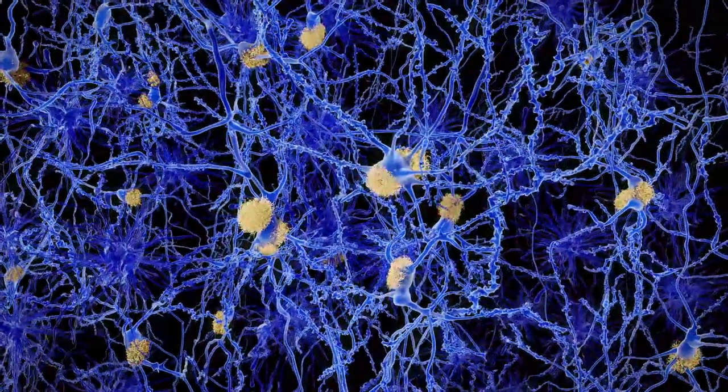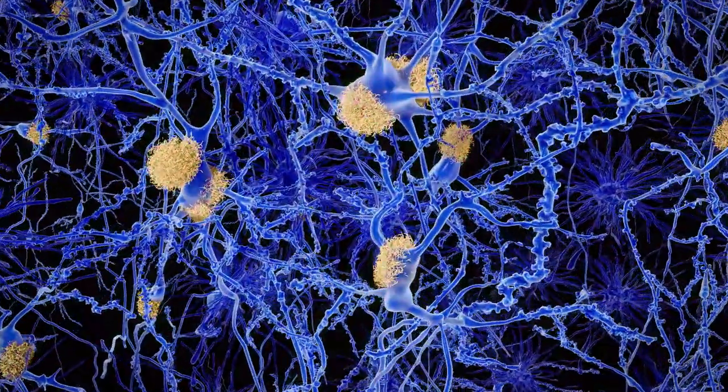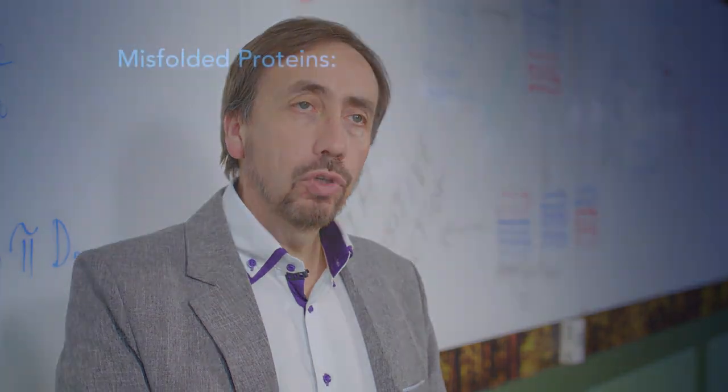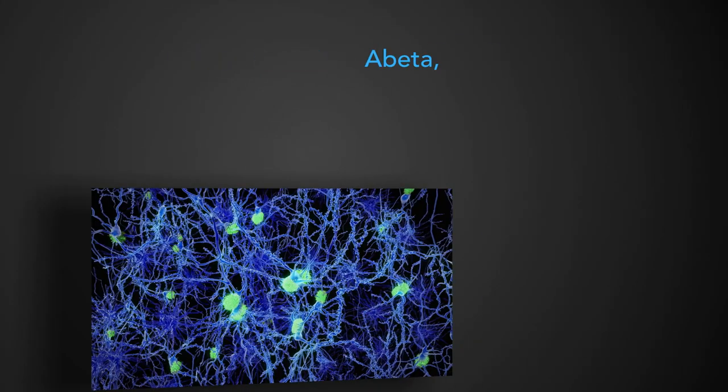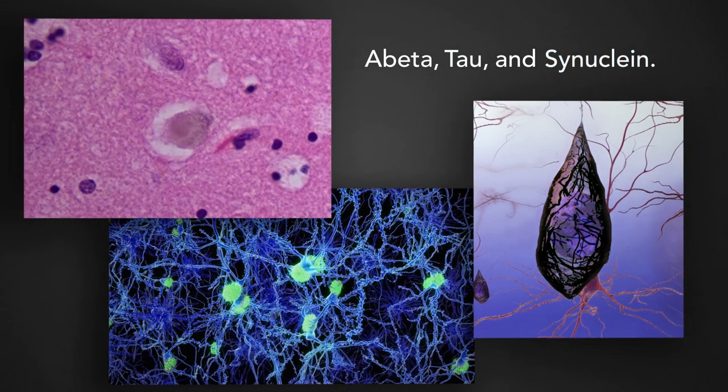Alzheimer's and Parkinson's are caused by misfolded proteins in the brain that produce toxicity, kill neurons and destroy the brain. In Alzheimer's, there are two different proteins that misfold and aggregate - amyloid beta protein and the tau protein. In Parkinson's disease, there is another protein called alpha-synuclein.